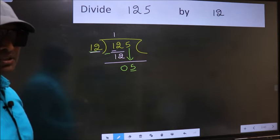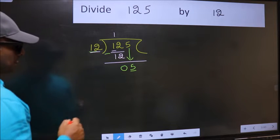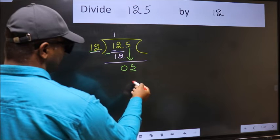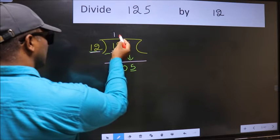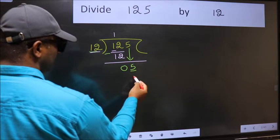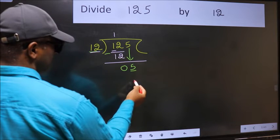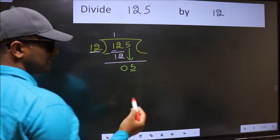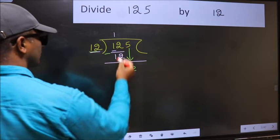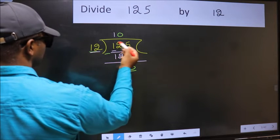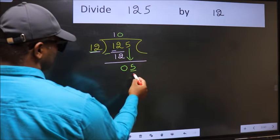Instead, what you should think of doing is, which number should we take here? If I take 1, we will get 12. But 12 is larger than 5. So what we should do is we should take 0. So 12 into 0, 0.